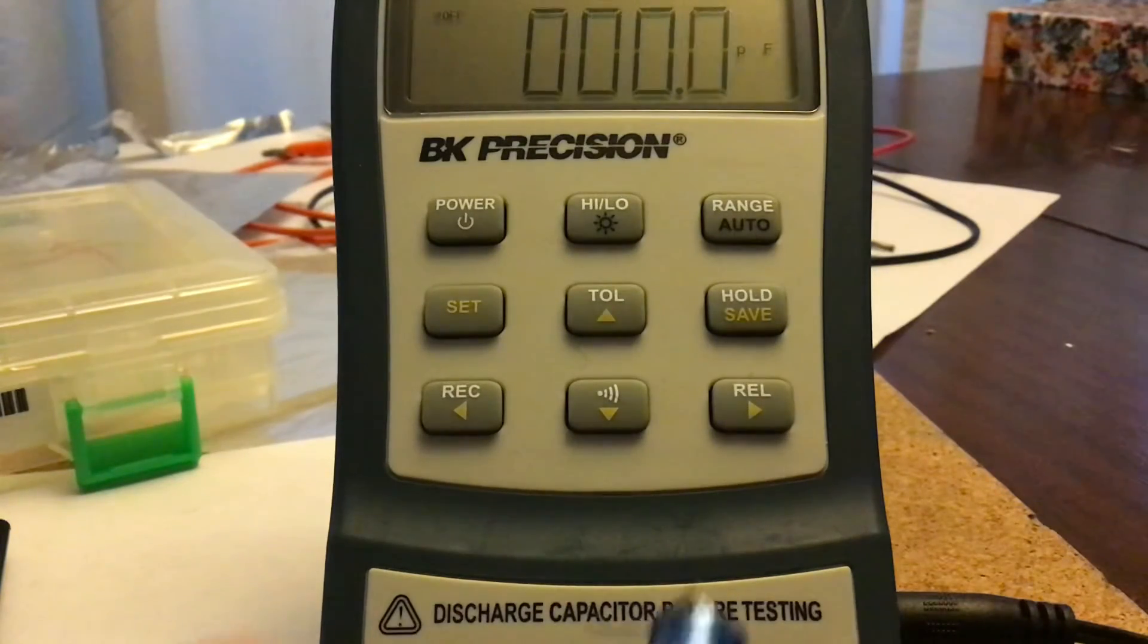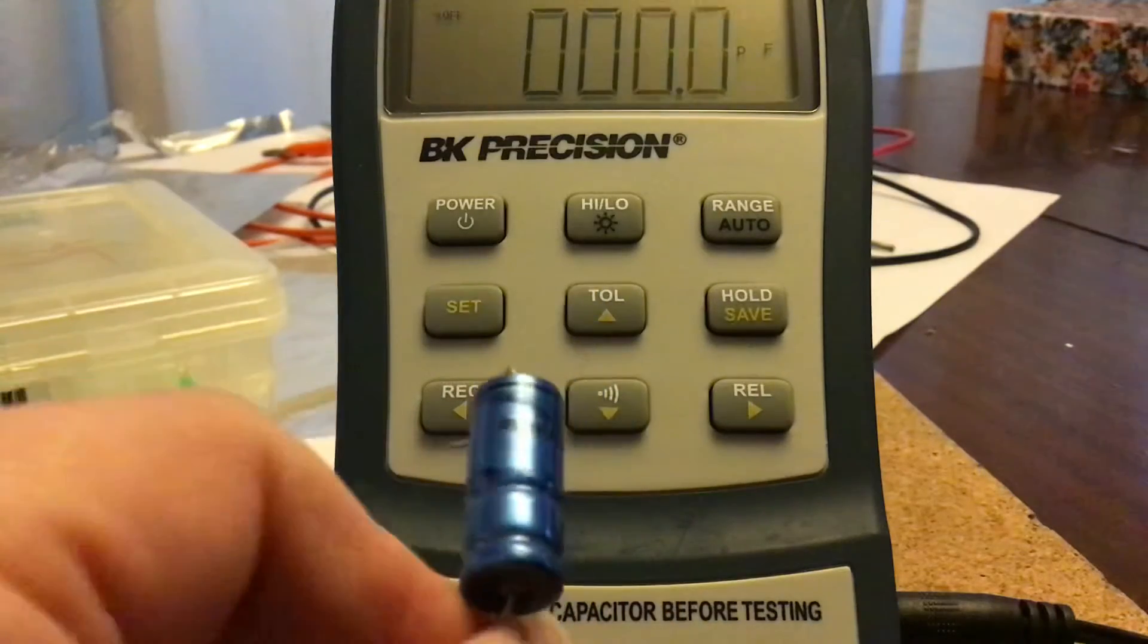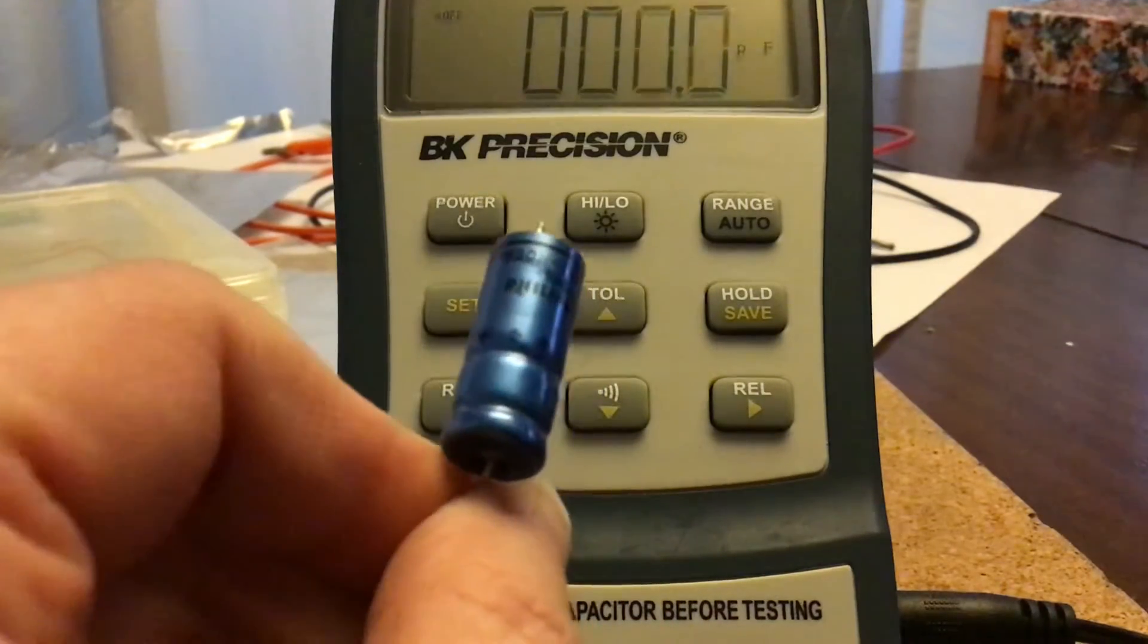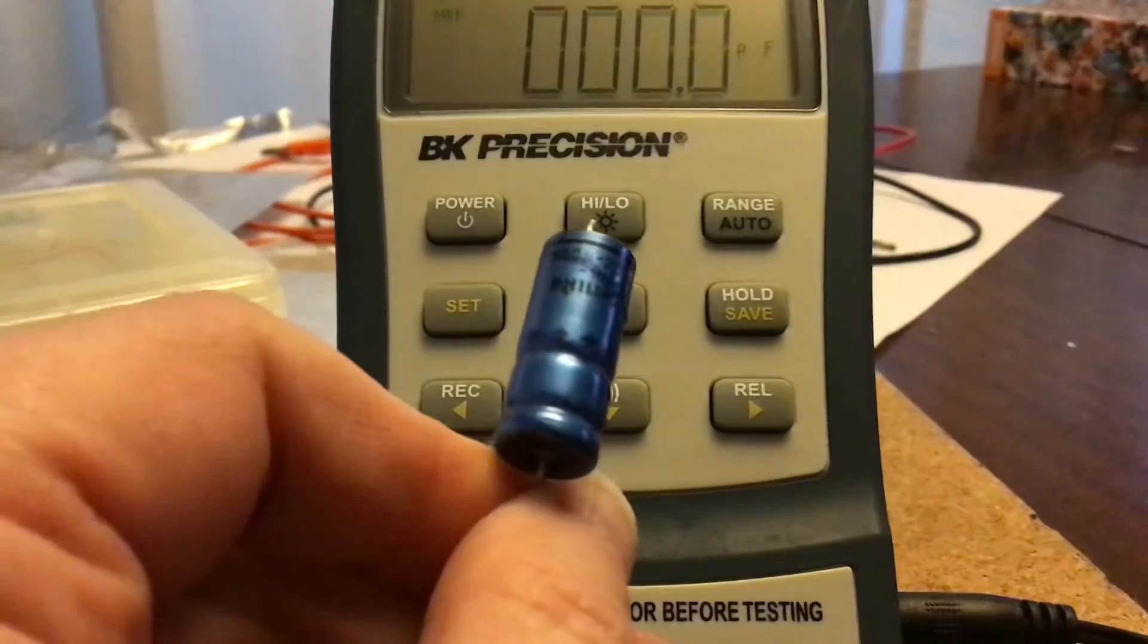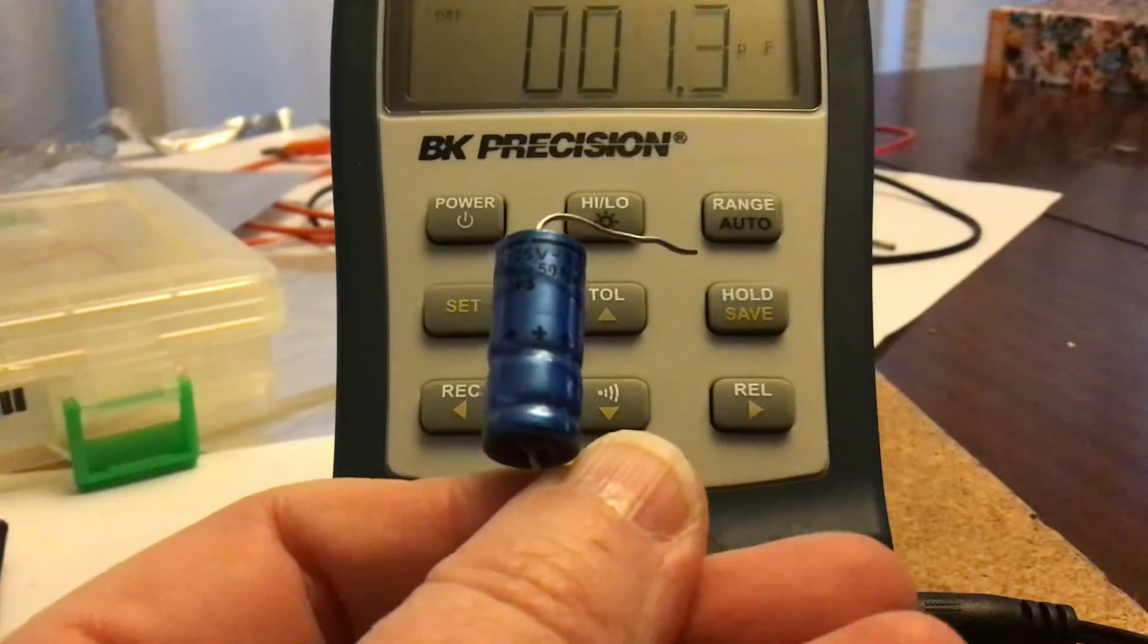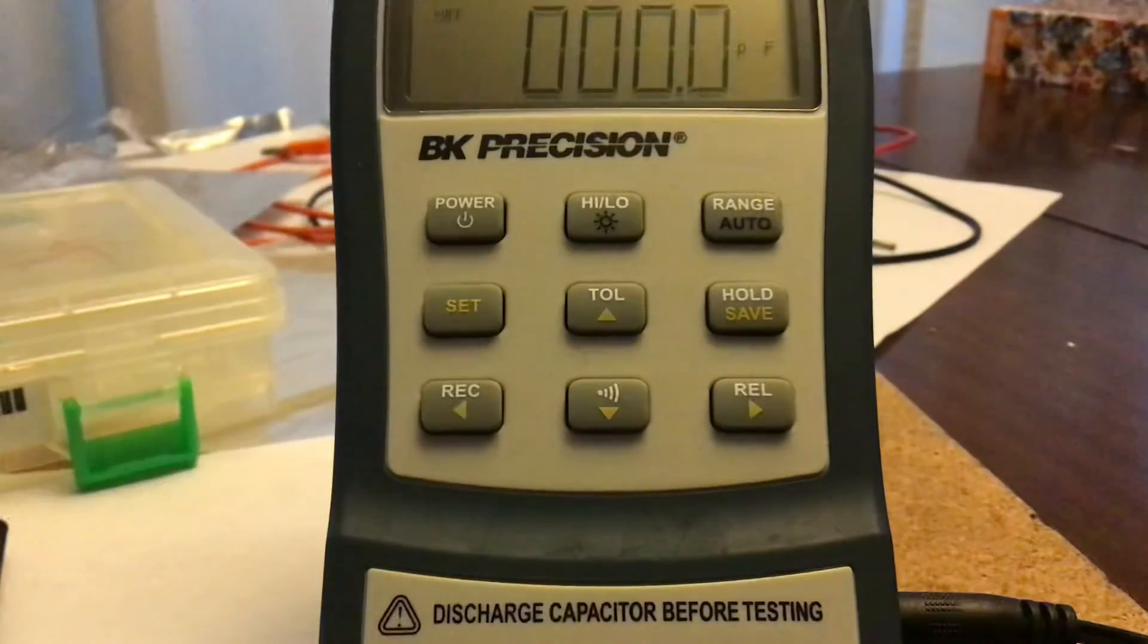This one, however, does. This is the Philips one. I mentioned this one before. This is a 330 microfarad, and the tolerance is between minus 10% to plus 50%.